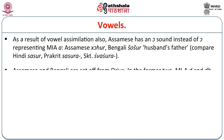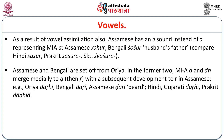As a result of vowel assimilation, Assamese also has an o sound instead of o representing Middle Indo-Aryan. For example, Assamese kohur, Bengali shoshur meaning 'husband's father', compared with Hindi shoshur, Prakrit shoshura, and Sanskrit shoshura. Assamese and Bengali are set off from Odia in some features. In the former two, Middle Indo-Aryan ḍa and ḍha merge medially to ḍ, then r, with subsequent development to r in Assamese. For instance, Prakrit ḍaḍi: Bengali — daṛi, Assamese — dari; compare Hindi, Gujarati — daḍi, Prakrit — dariya.